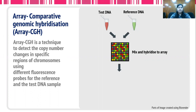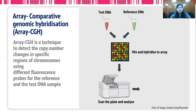This array contains probes representing the human genome. The test DNA and the reference DNA samples competitively bind to these probes, and three different types of signals can be observed: a yellow signal indicates equal copy number of test and reference DNA for a particular region, while more red or more green depicts the loss or gain of the specific test or reference DNA.